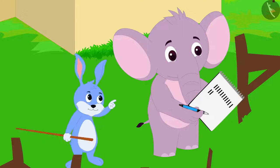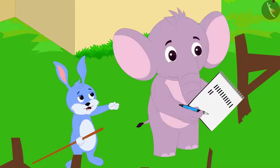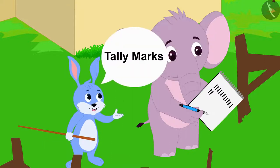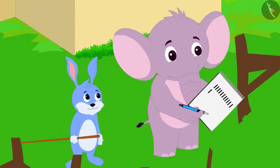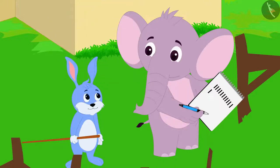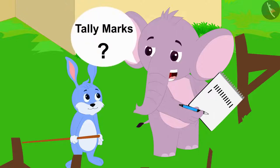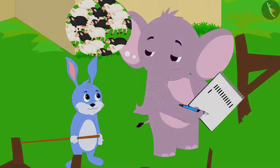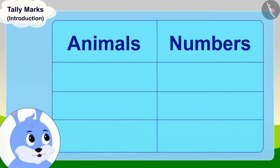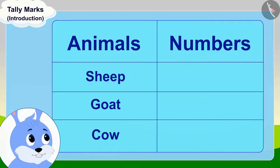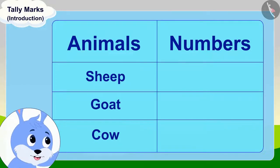Seeing Appu counting his sheep like this, Bunny said to him, Appu, why don't you use tally marks to count your sheep? Appu did not understand anything. He asked Bunny, what are tally marks, and how can I use them to count my sheep? Bunny replied, it is very easy. First, you make a table like this and write the names of all the things you have to count in it.